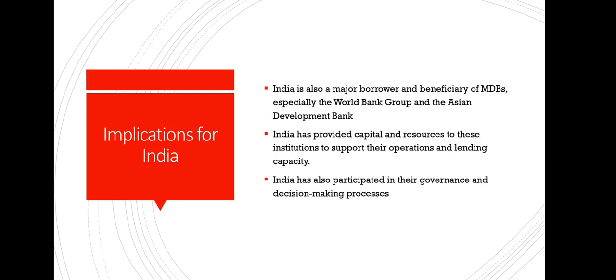What are the implications for India? India is the biggest contributor as well as a loan taker from the Asian Development Bank and the World Bank. Reforming Multilateral Development Banks will impact India significantly. The reform will help India adapt to the new modified world, and it will enhance accountability. Loan capacity can be improved and the lending system can be made better.